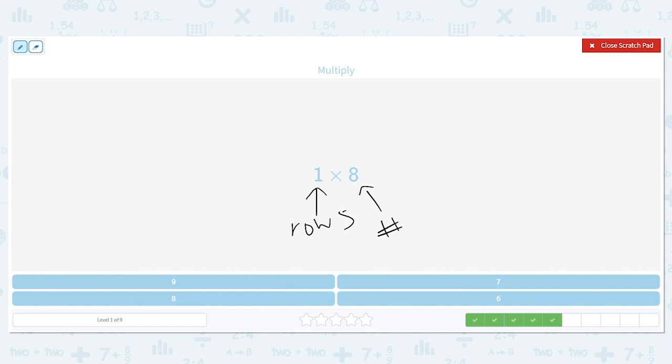So this is saying I have 1 row and I have 8 objects in the row. So 1, 2, 3, 4, 5, 6, 7, 8. And that gives me a total of 8. I have 1 row and there's 8 circles in the row.